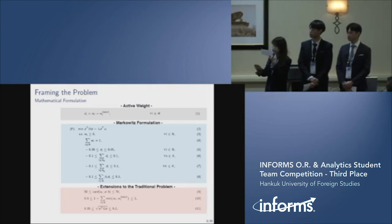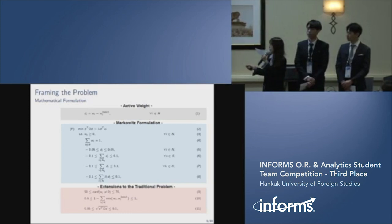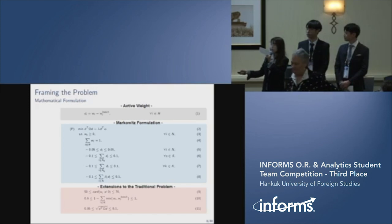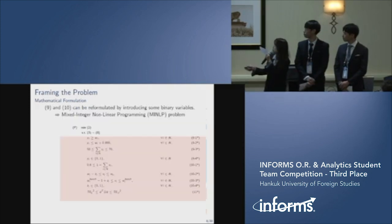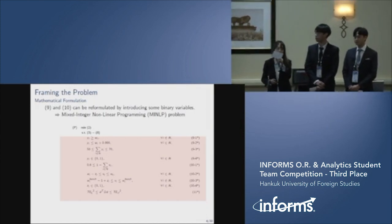The problem consists of three main parts, which are active weight, Markowitz formulation, and some extensions that reflect the real world. The constraints with red box are tricky constraints because they are non-convex. Each constraint represents cardinality, active share, and tracking error. It can be reformulated to mixed integer non-linear programming problem by introducing binary variables.